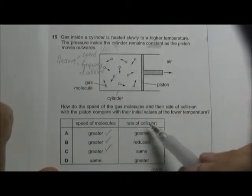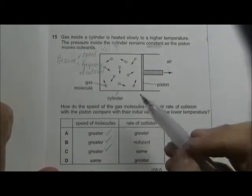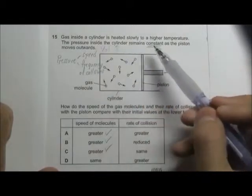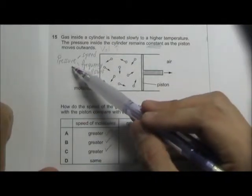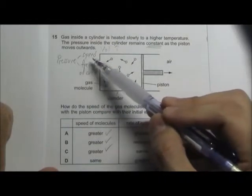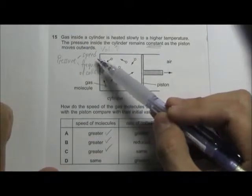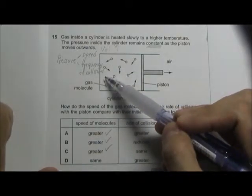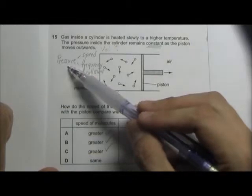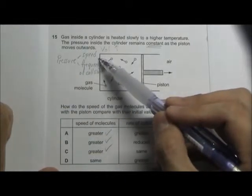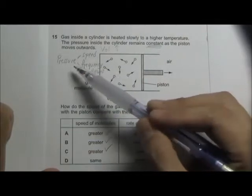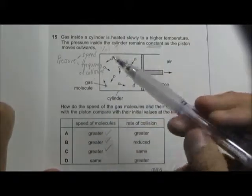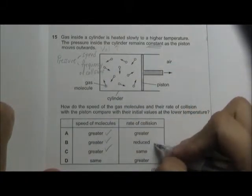And now we look at the rate of collision. Because the pressure remains constant and we know that pressure depends on the speed of molecules and the frequency of collisions, so if this is a constant value and our speed has already increased, the frequency of collision must decrease so that we can get constant pressure. So the answer should be B.